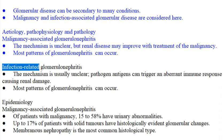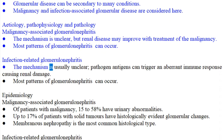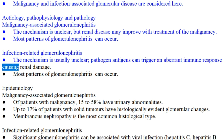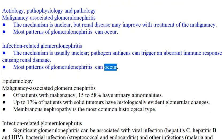Infection-related glomerulonephritis: the mechanism is usually unclear, but pathogen antigens can trigger an aberrant immune response causing renal damage. Most patterns of glomerulonephritis can occur.